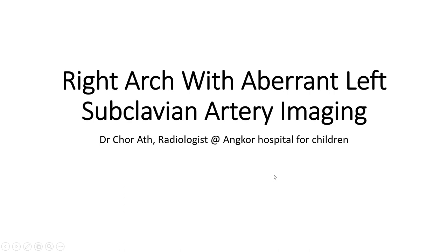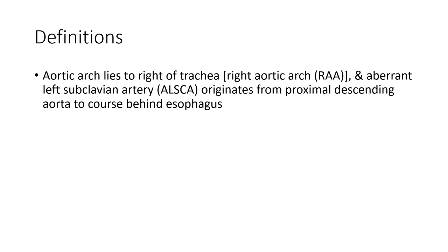Hello everyone. Today I am going to show you about the right aortic arch with aberrant left subclavian artery. The aortic arch lies to the right of the trachea, and the aberrant left subclavian artery originates from the proximal descending aorta to course behind the esophagus.